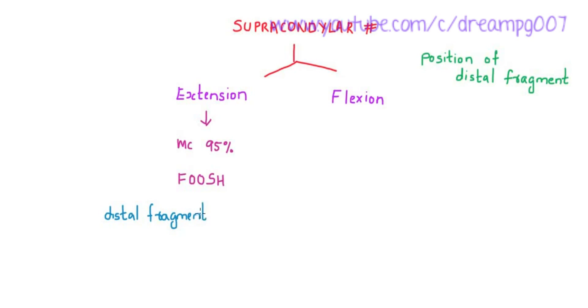The second type, flexion type, constitutes about 5 percent. Mechanism of injury in flexion type supracondylar fracture is direct trauma. Here the distal fragment is dislocated anteriorly. A classification used for the extension type of supracondylar fracture is Gartland classification.